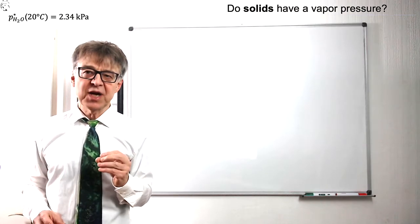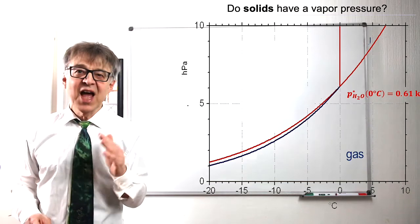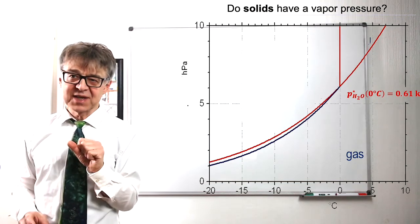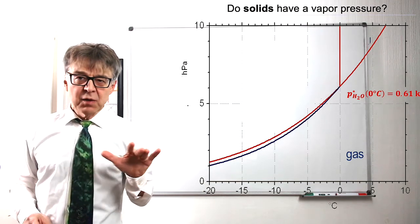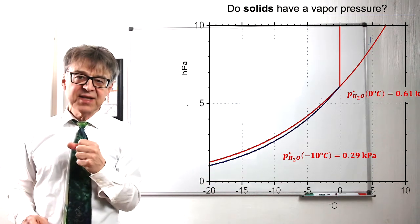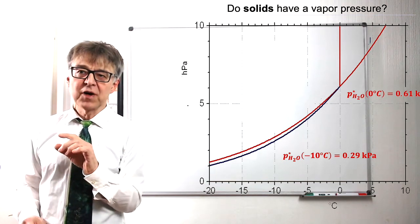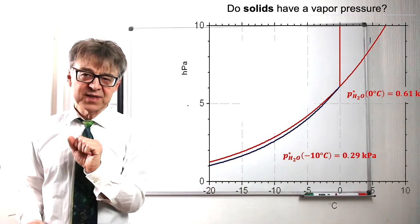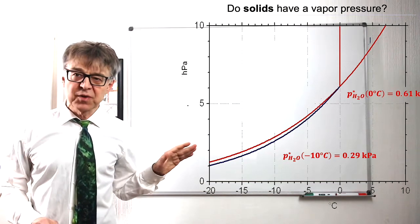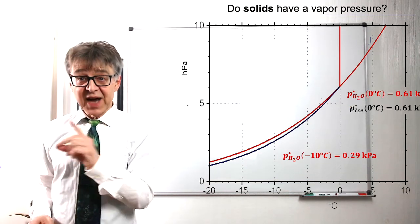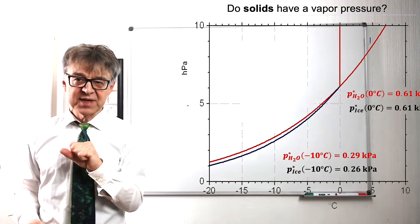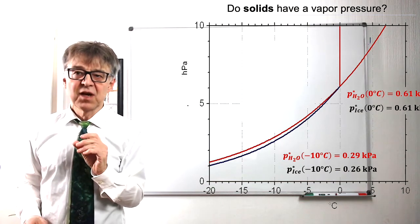Liquid water has a vapor pressure of 2.3 kPa at 20°C. We cool the water down to 0°C and then measure a vapor pressure of 0.61 kPa. If we are careful, we succeed in cooling down the liquid water below 0°C, and at -10°C we measure a vapor pressure of only 0.29 kPa. This vapor pressure of undercooled metastable liquid water corresponds to the red curve. Solid ice at -10°C has a lower vapor pressure, namely 0.26 kPa. The black curve corresponds to the vapor pressure of solid ice.